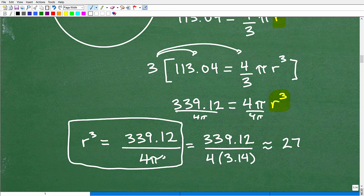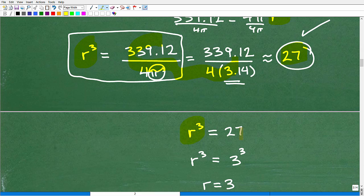Now pi, again, it's an exact value. So let's go ahead and use an estimate for pi. 3.14. So this is 339.12 divided by 4 times 3.14. And when we do this math, we get 27. Okay? Wow. That's pretty cool. So when you go into your calculator, you'll get 27. So R cubed, we did all this number crunching, turns out to be equal to 27. So R cubed, that's our radius cubed, is equal to 27.